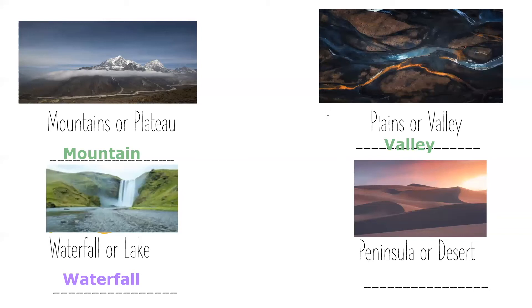The last question is desert or peninsula? This is a very dry area. A peninsula is surrounded by water on all sides except one, but a desert is not surrounded by water — so the answer is desert.